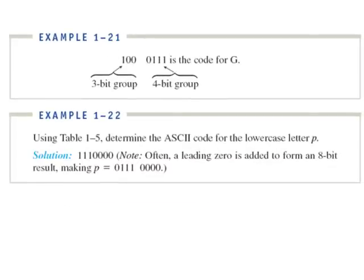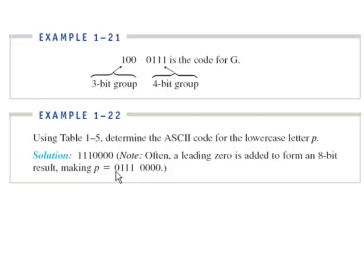In examples 21 and 22, if you have the string 1, 0, 0 and 0, 1, 1, 1, what is that code? Flip back to the previous page and look that up — make sure you see it's a capital letter G. Then go back to table 1-5 and tell me what the ASCII code is for lowercase letter P. When you look that up, a leading zero is placed to form an 8-bit string. So P — you just put that leading zero on there. Also, a lot of times we'll write this in hexadecimal: this would be a 7, 0.